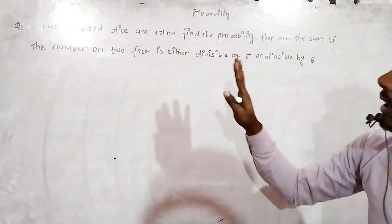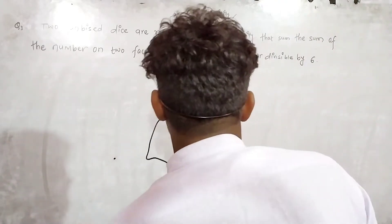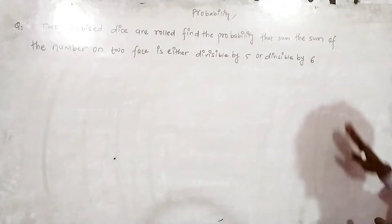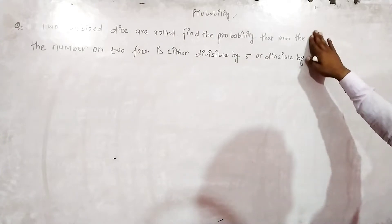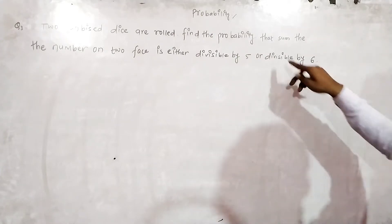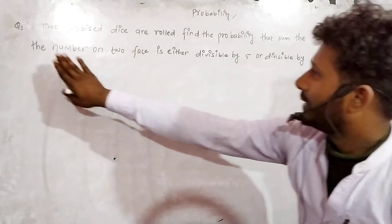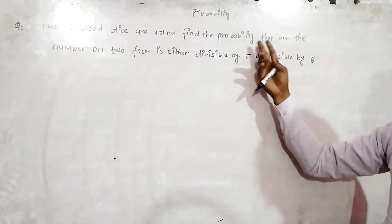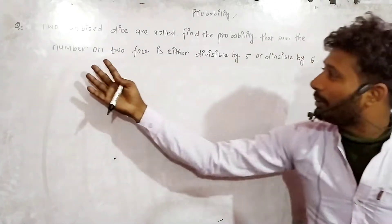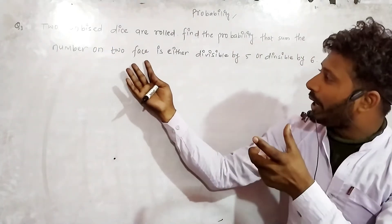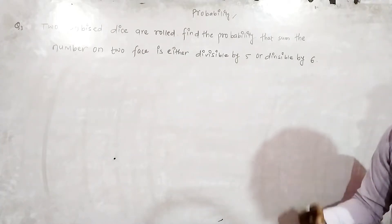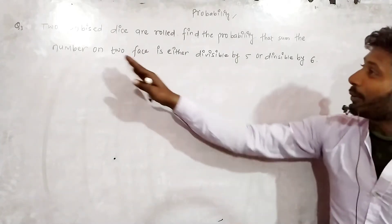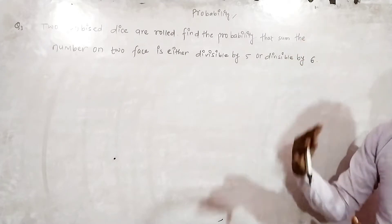The question is: two unbiased dice are rolled. Find the probability that the sum of the numbers on the two faces is either divisible by 5 or divisible by 6.